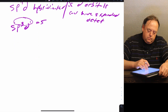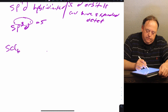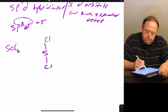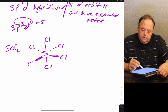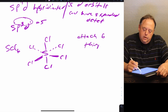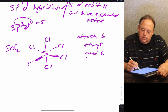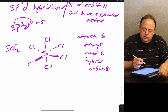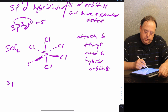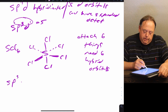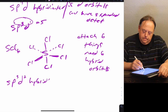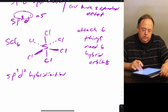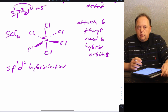For something like SCl6, if you want to attach six things to make the octahedral SCl6, you need six hybrid orbitals. So what would the hybridization be? You mix six different orbitals — you always take s, and you always take as many p's as you need, so three. Now you need two more orbitals, so you take two from d. That gives sp3d2 hybridization.